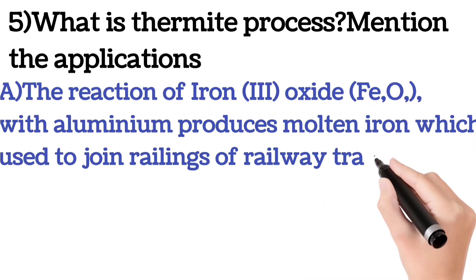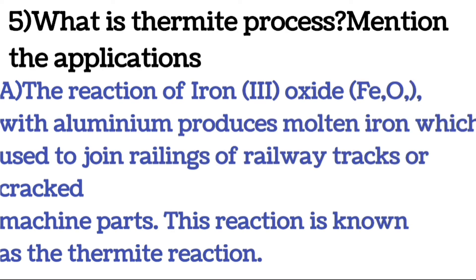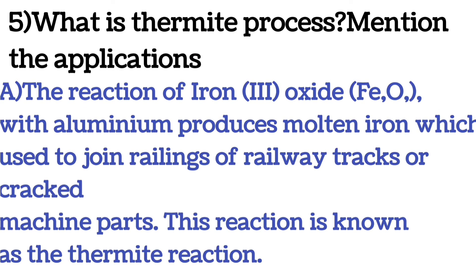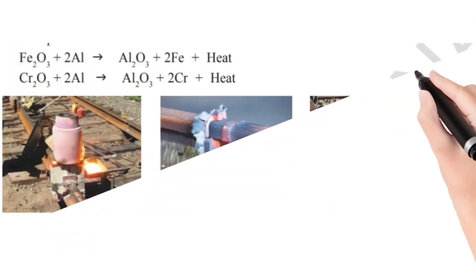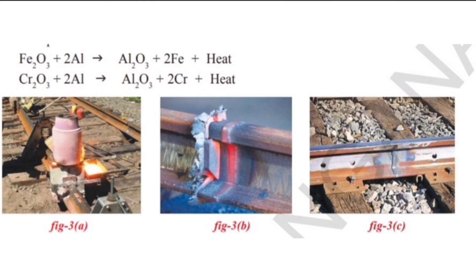Fifth question: what is the thermite process? The reaction of iron oxide Fe₂O₃ with aluminium produces molten iron, which is used to join railings of railway tracks or cracked machine parts. This reaction is known as the thermite reaction: Fe₂O₃ + 2Al → Al₂O₃ + 2Fe + heat. Similarly, Cr₂O₃ + 2Al → Al₂O₃ + 2Cr + heat.